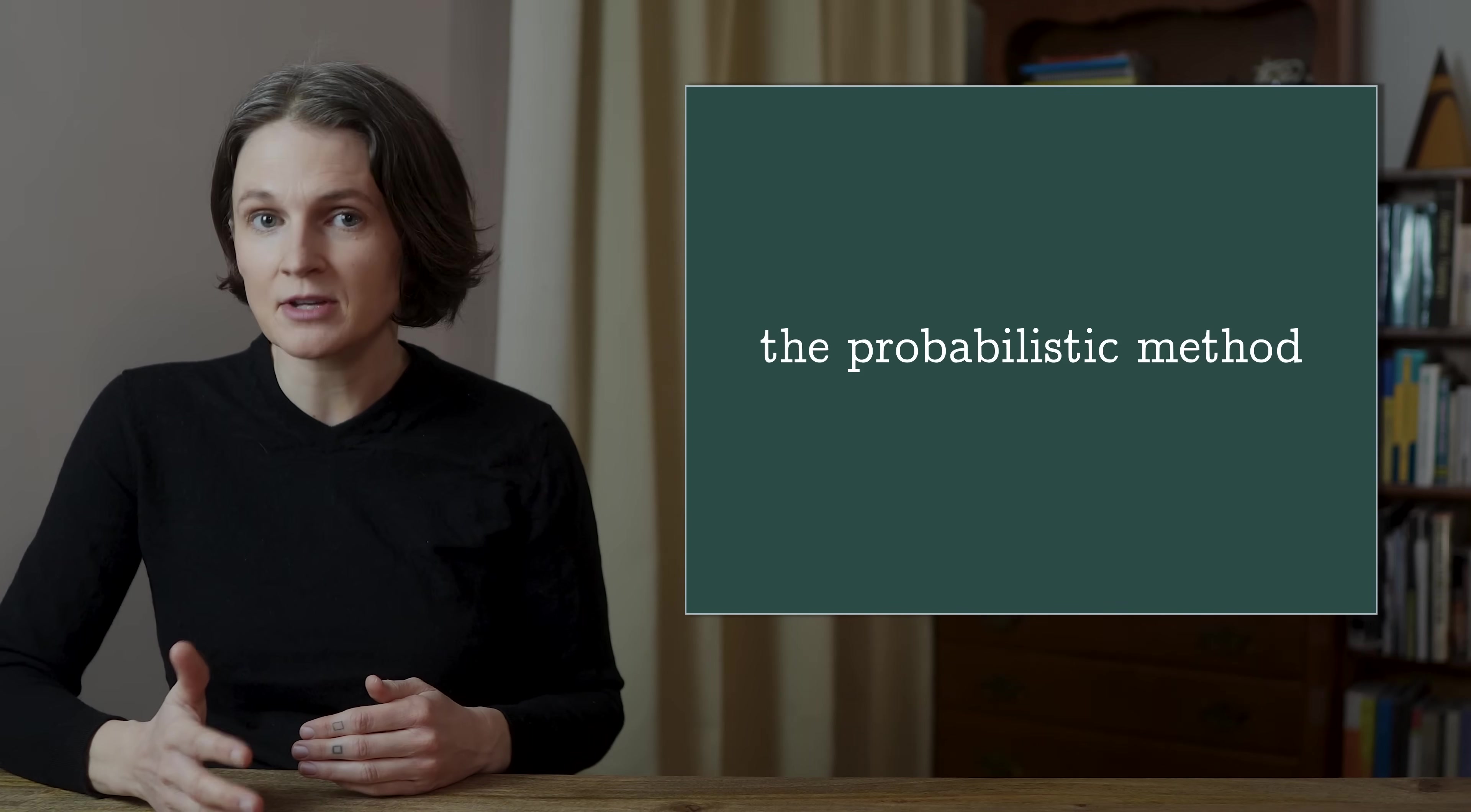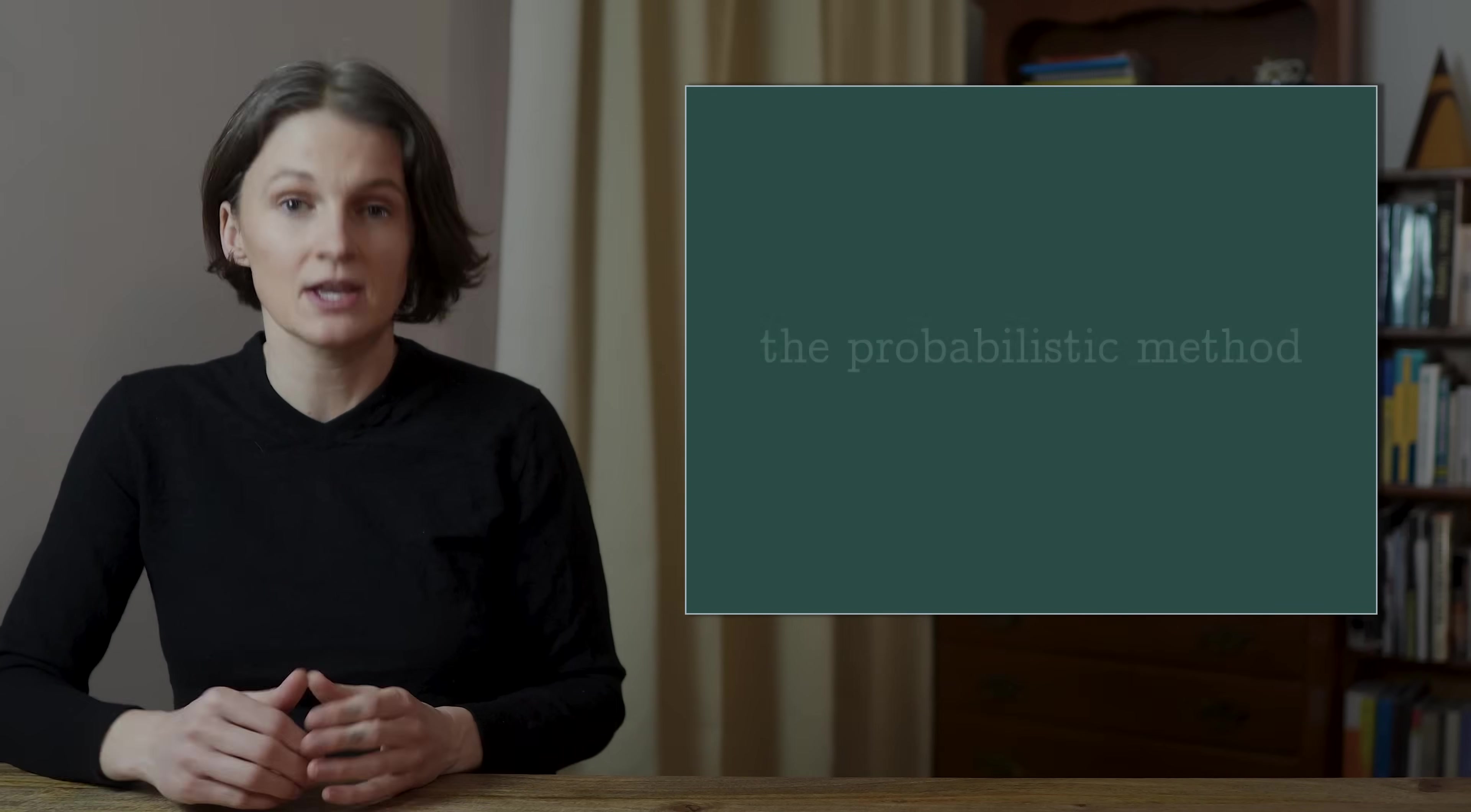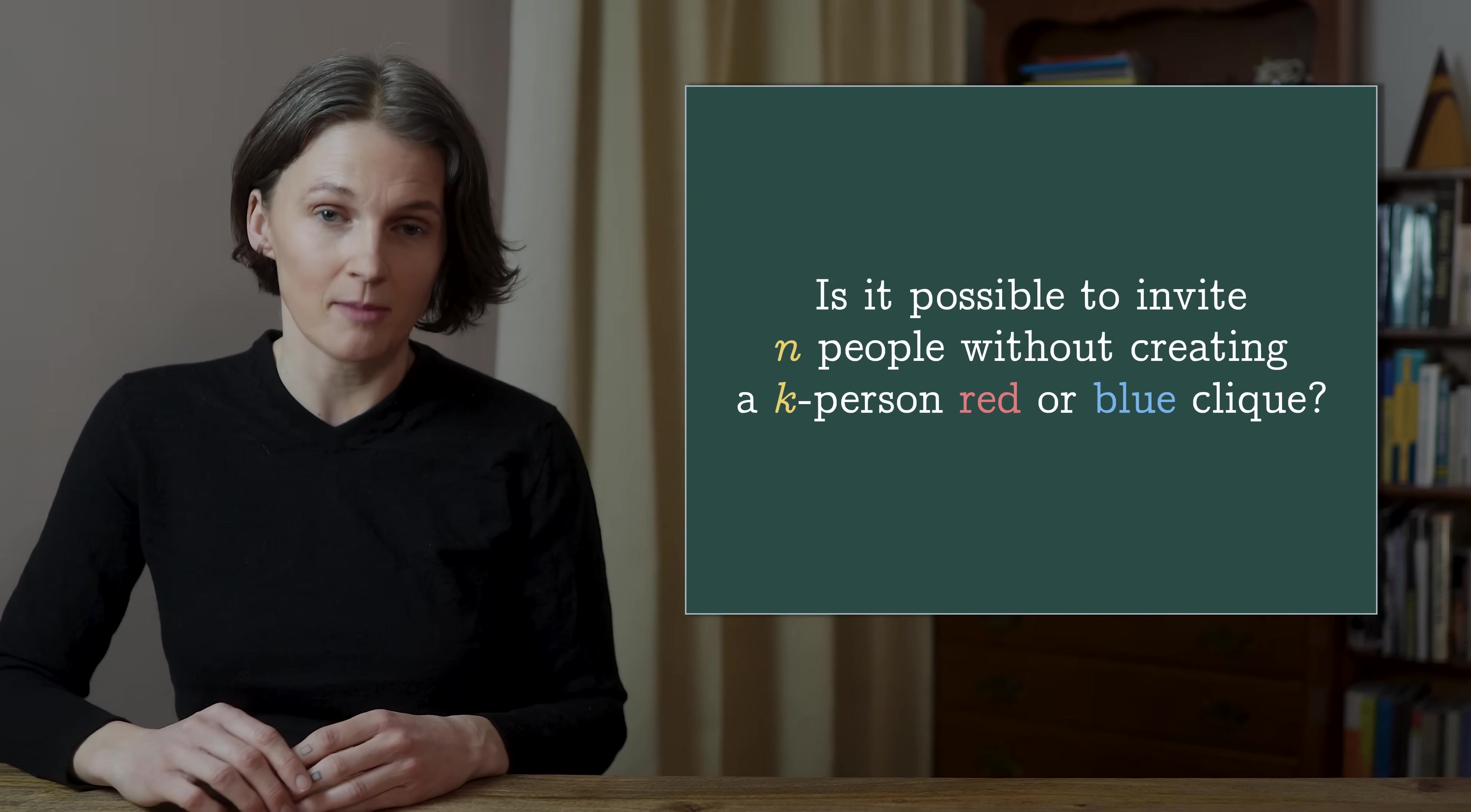In 1947, Paul Erdos was thinking about this friends and strangers question, which falls in an area of combinatorics called Ramsey theory. His calculation, his proof, was basically exactly what we just did, and it was a huge step in the development of the probabilistic method.